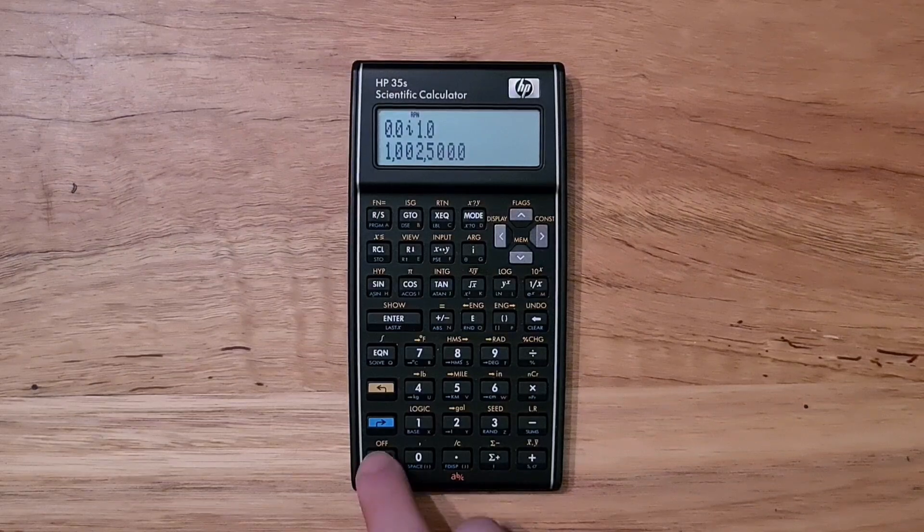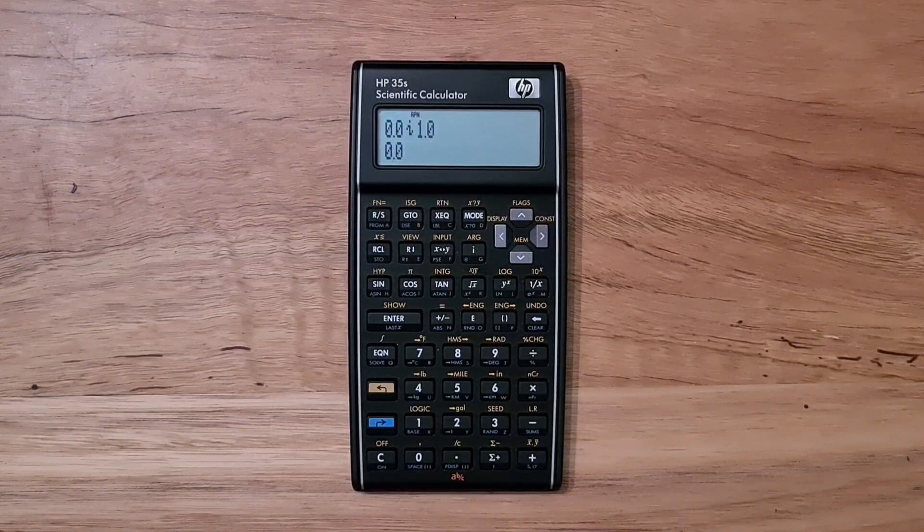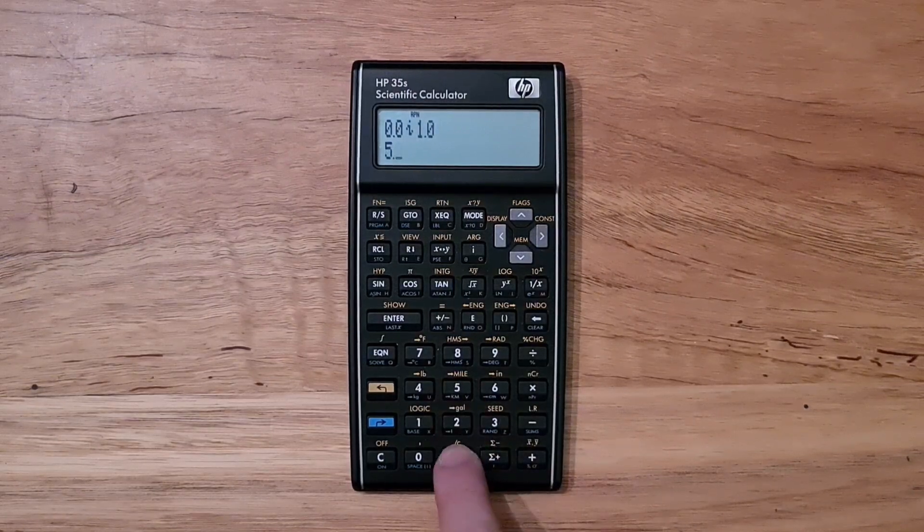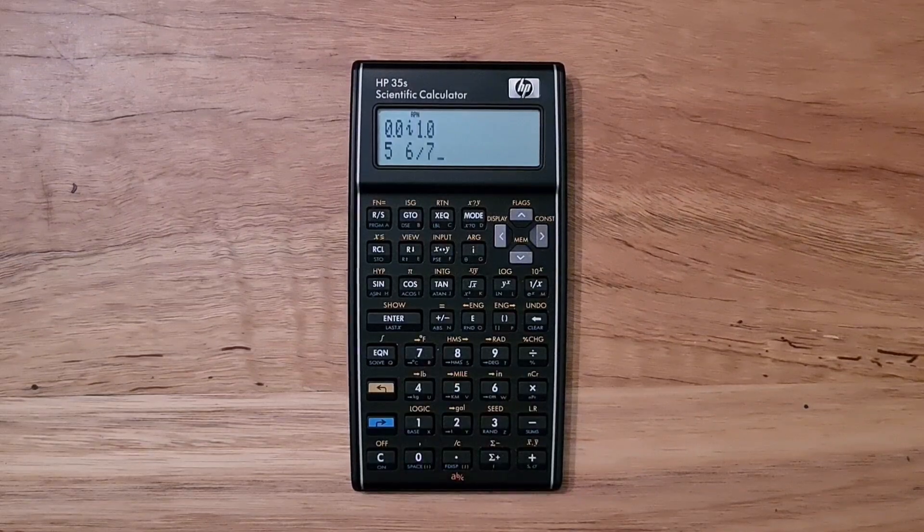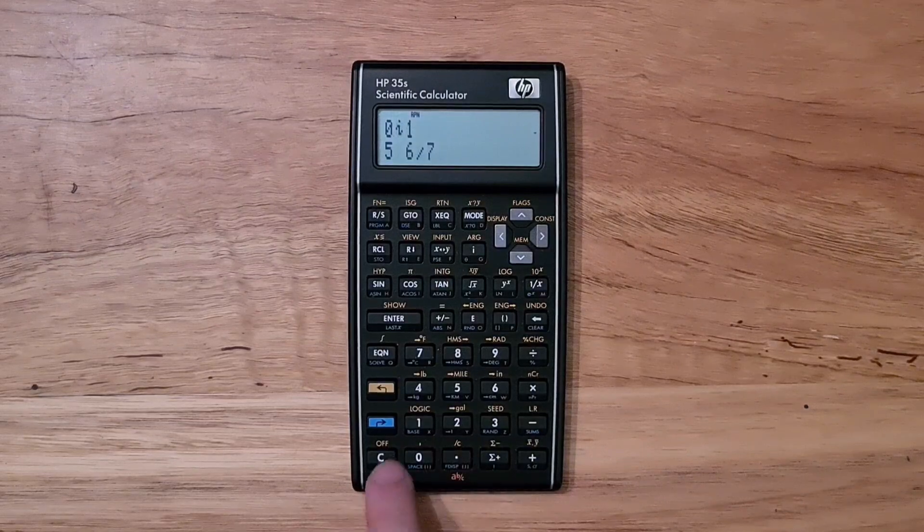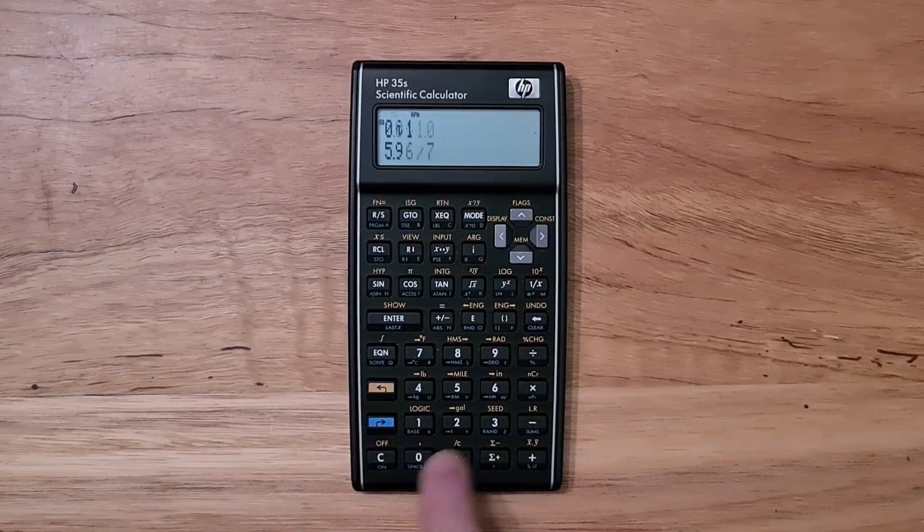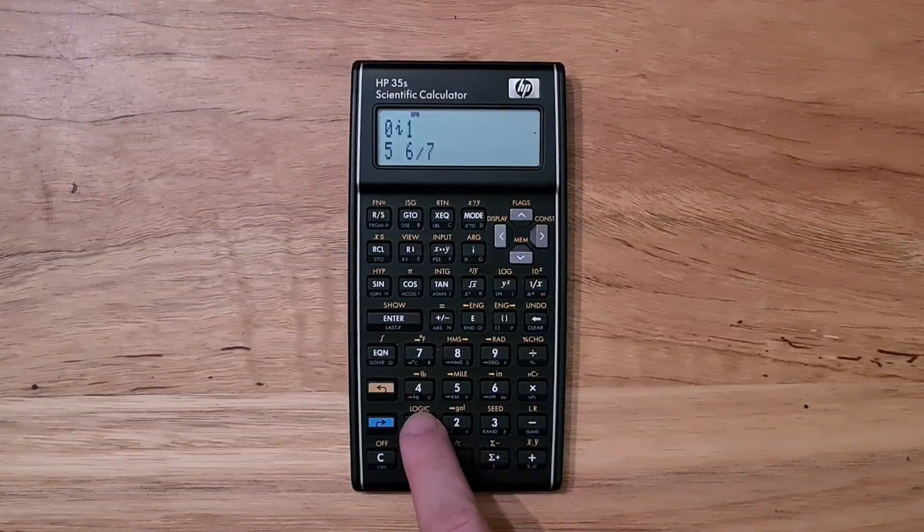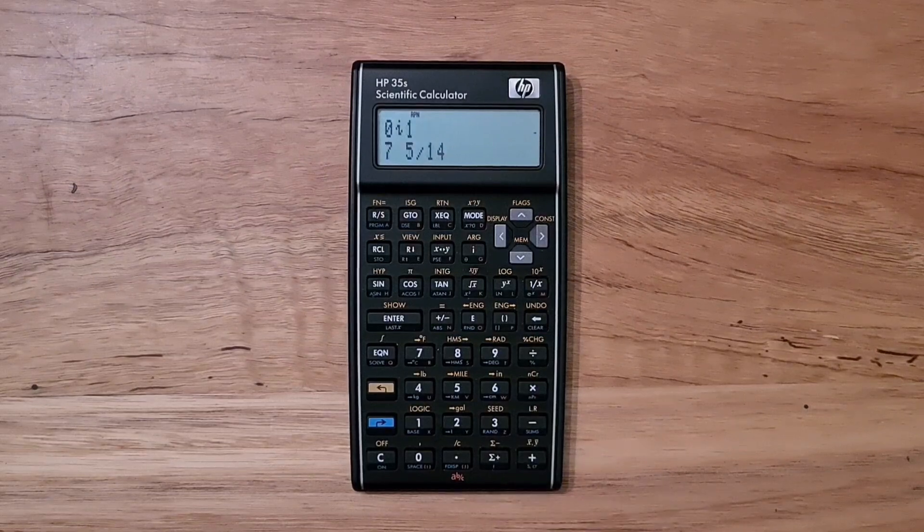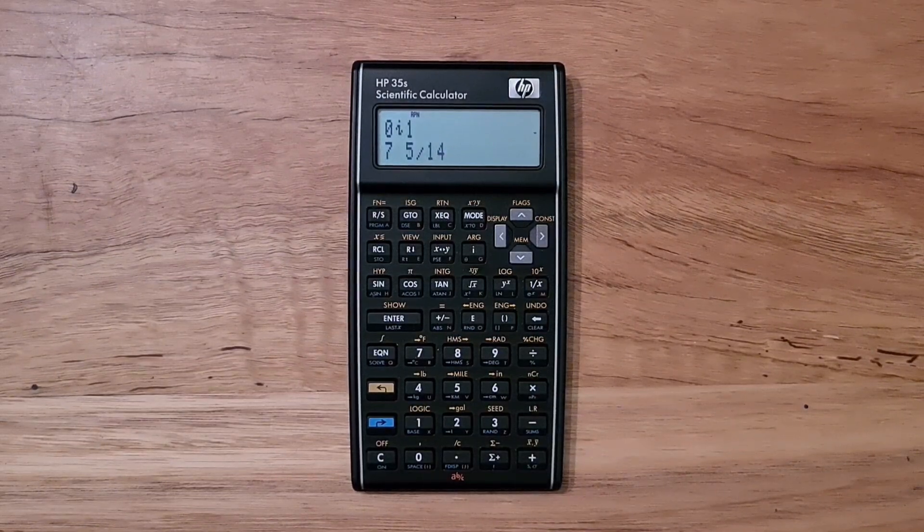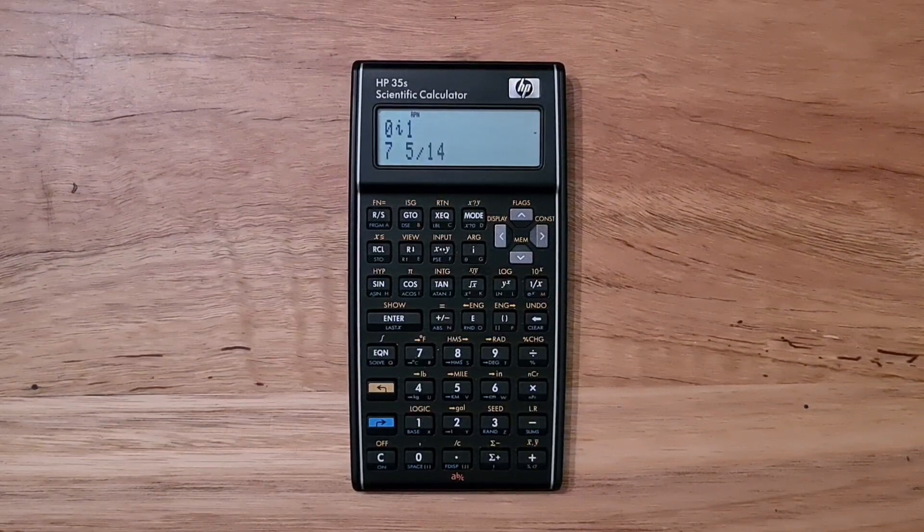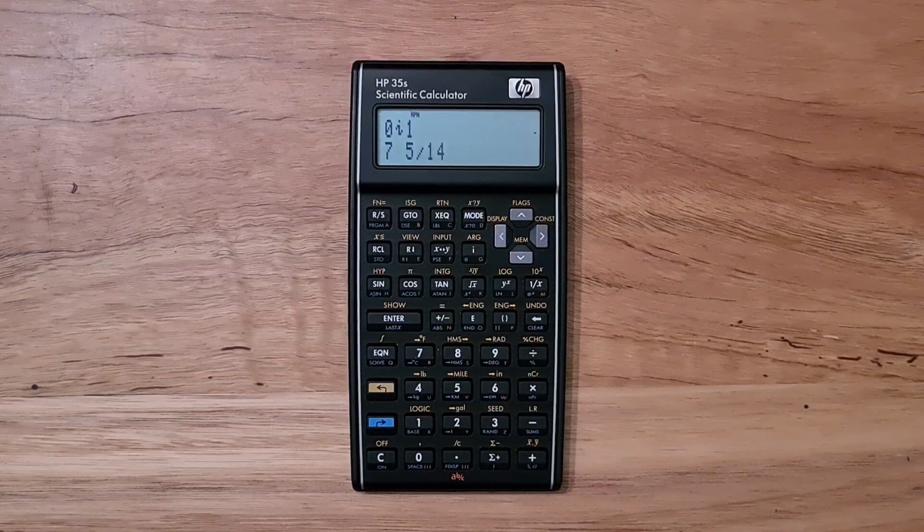Fractions are also supported. To enter five and six sevenths, I'd type in five dot six dot seven. I can switch between fractional view and decimal view at any point, which is nice. I can do arithmetic with fractions, and the results are simplified, which is quite nice. This fraction feature, which was introduced in the HP 32S2, is really quite useful in many situations.